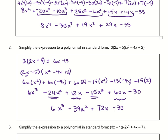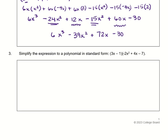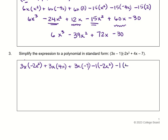On to the last problem: simplify the expression 3x minus 1, times the quantity negative 2x² plus 4x minus 7. We'll take the 3x and distribute it to all the terms in the second expression: 3x times negative 2x², plus 3x times 4x, plus 3x times negative 7. Then distribute the negative 1: minus 1 times negative 2x², minus 1 times 4x, minus 1 times negative 7.